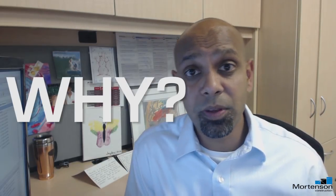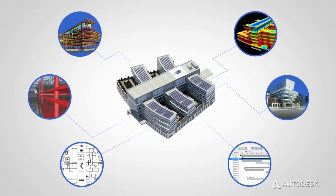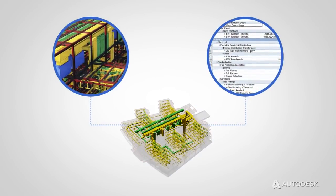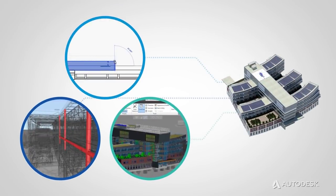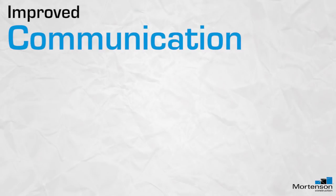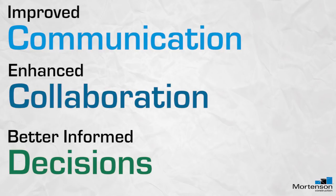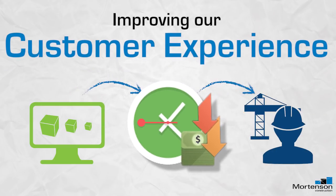So why do we perform BIM and VDC? BIM and VDC allows us to create a virtual prototype, similar to the aerospace and automotive industries, where they plan and simulate their projects virtually before they go out and build. This drives certainty into our design and construction process. With increased certainty, our teams can better communicate through the visual medium, which enhances collaboration across the project team, driving early, timely, and best-informed decisions — allowing us to focus on improving our customer experience and reducing the time and cost of construction.